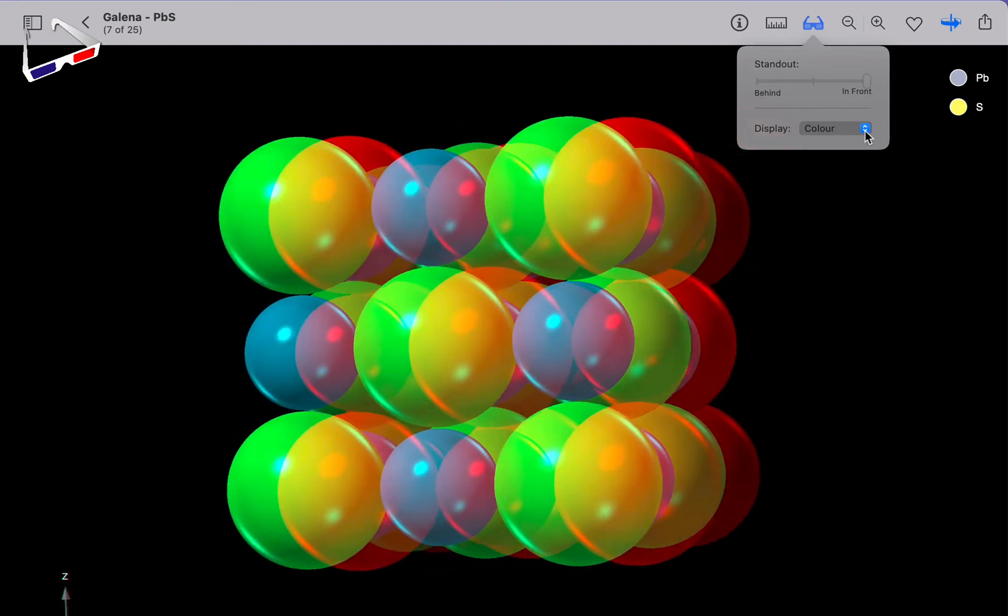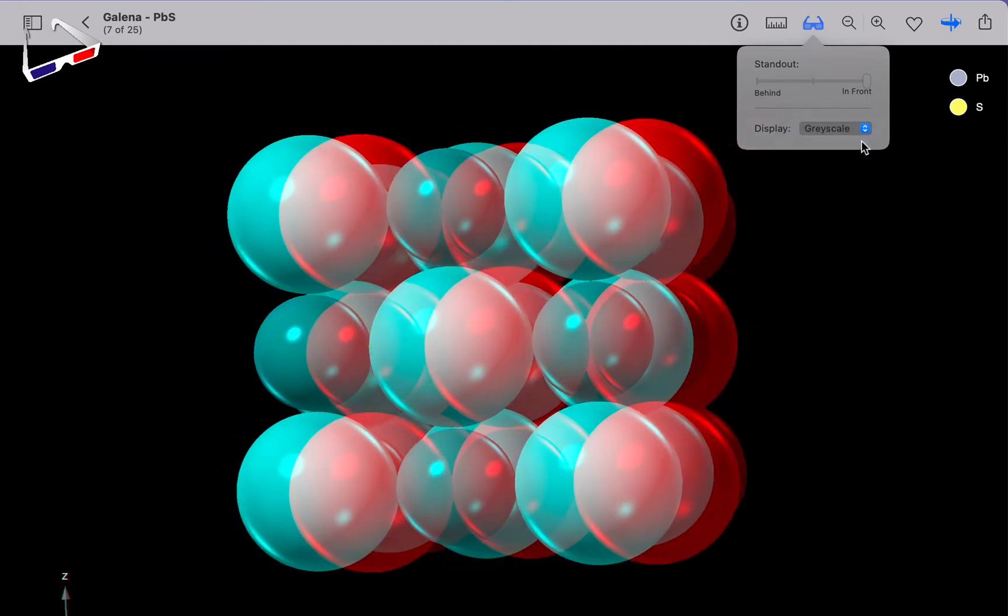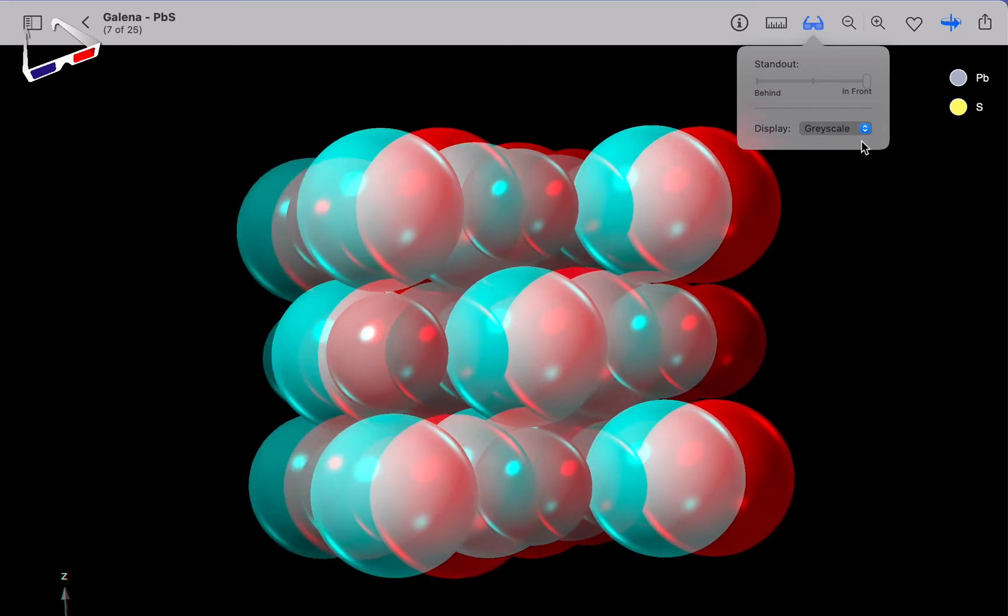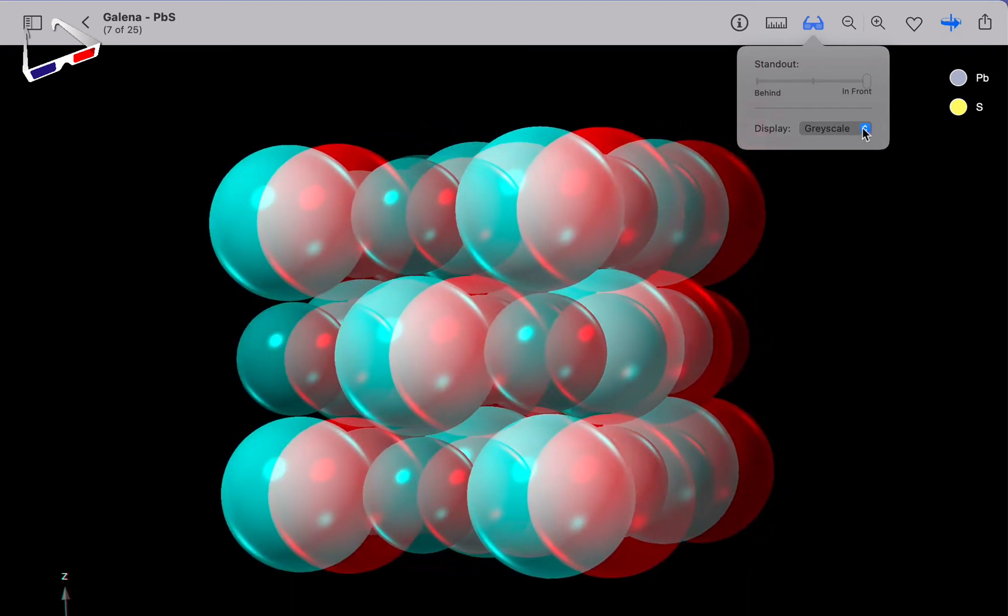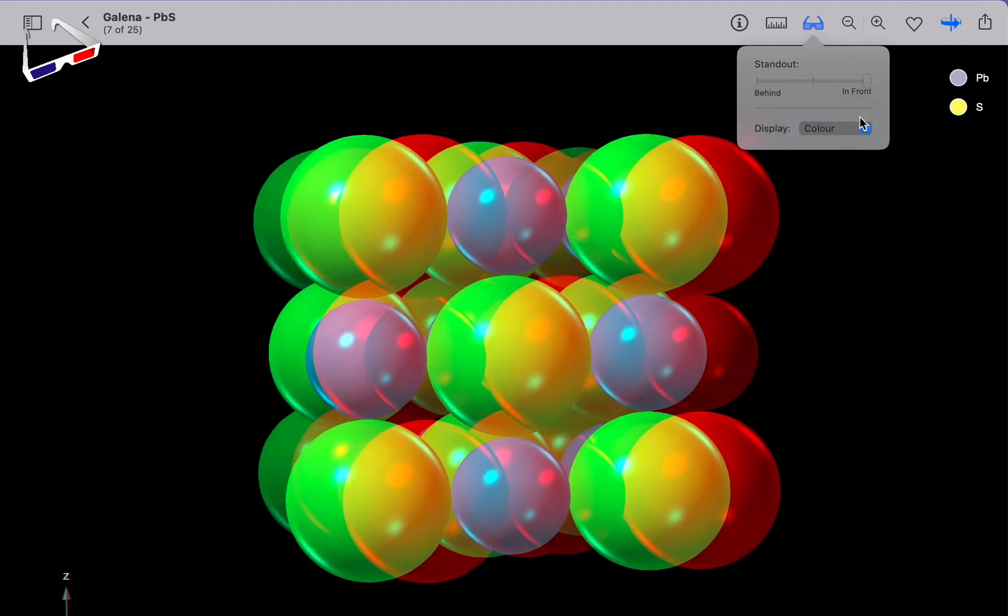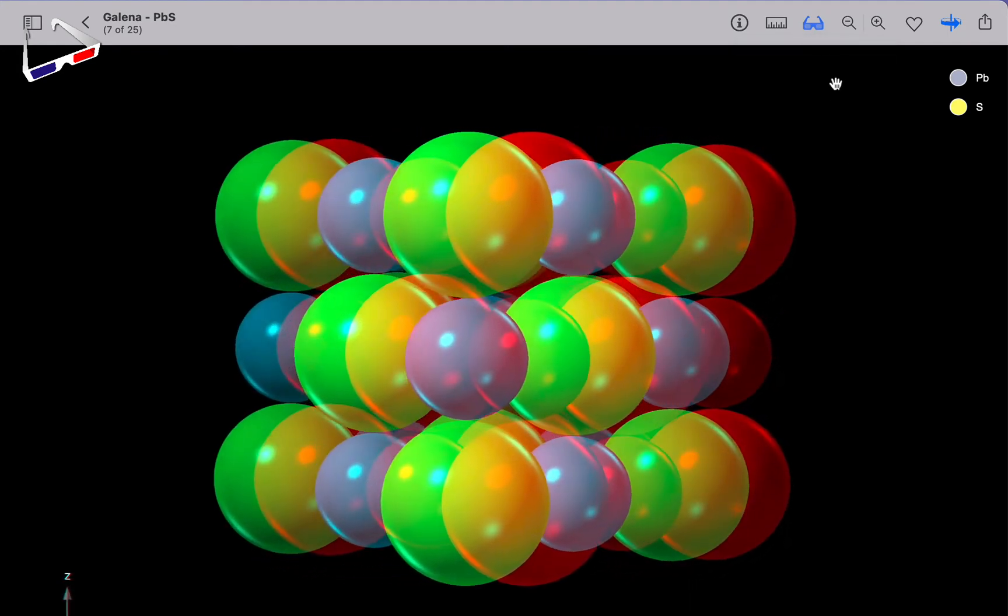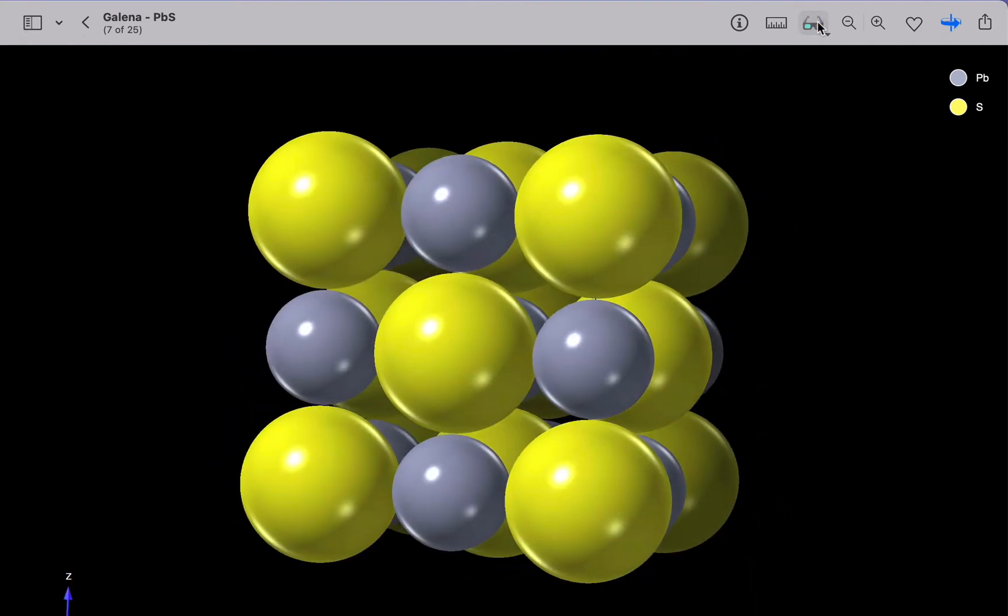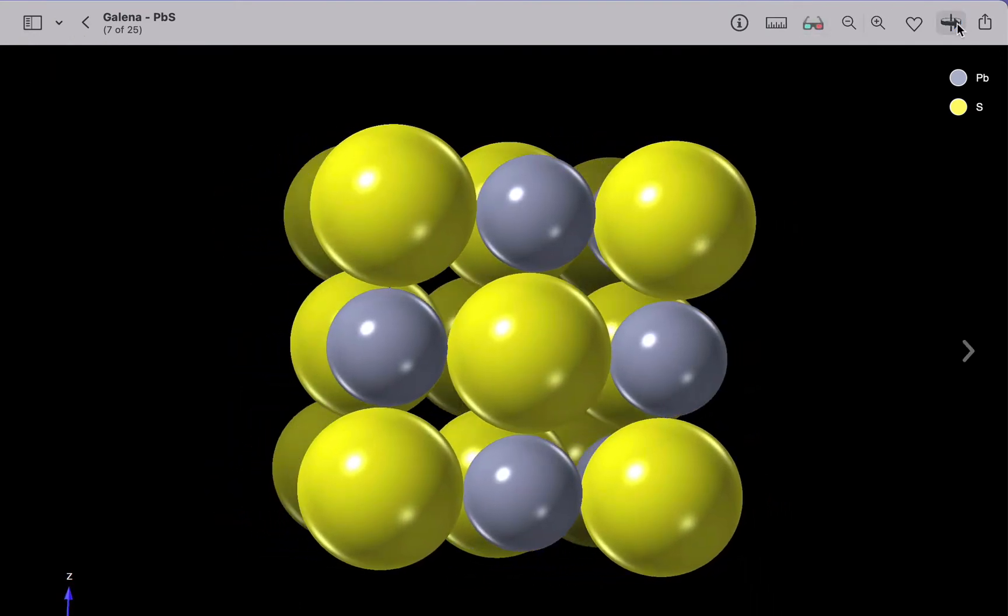Now you do also have the option of switching to a grayscale viewing mode. Some people find that more comfortable, but it's not quite as impressive as colour stereo. OK, let's turn off the stereo by pressing this button here. Let's turn off the auto-rotation.